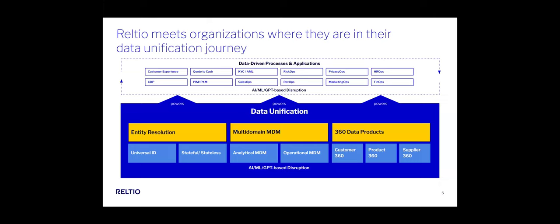There's one step further — not only understanding core data assets, but what transactions they have: a test drive on a used car, applying for credit, buying three items last week, making five calls to customer service. Unifying all of that with core data assets allows you to deliver customer data products across your organization. For example, understanding a customer's likelihood to churn and routing them live to a top-tier customer service person — no longer going through level one, level two, because you've identified who they are and provided real-time analytics to the operational application.